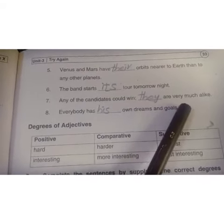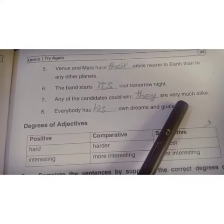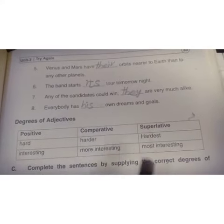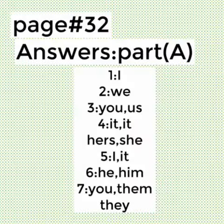Seventh: 'Any of the candidates could win — ___ are very much alike.' We use 'they.' Eighth: 'Everybody has ___ own dreams and goals.' Everybody has his own dreams and goals.